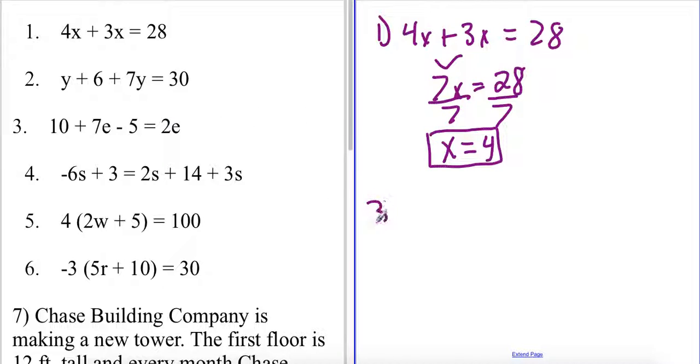Next on number 3 you can see that we have a constant of 10 plus a coefficient of 7e minus 5 equals 2e. Now when we combine like terms in here it's important to pay attention to the sign of the numbers that we're combining.